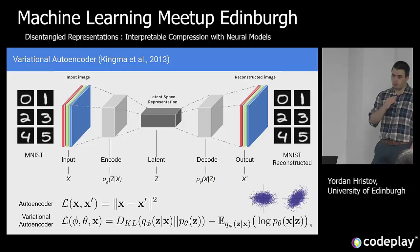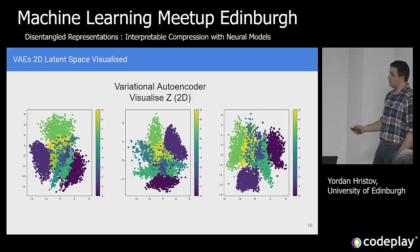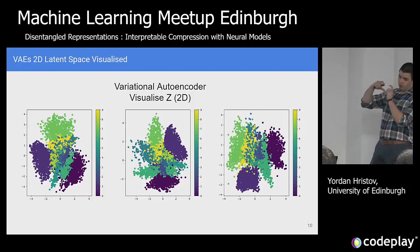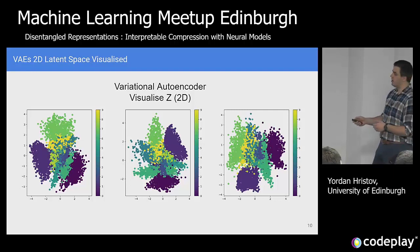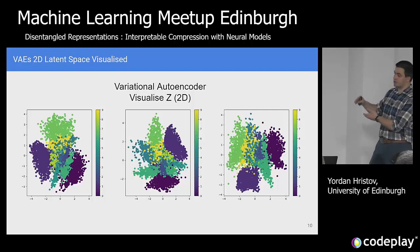If I have a two-dimensional space and I want my codes to look like a two-dimensional Gaussian with diagonal covariance, this approach allows me to impose that on the optimization process. Training the same model three times now shows that most of the data is centered at zero, zero, and doesn't go beyond minus four to four. Regardless of how many times I train it, the data always gets centered there. At test time, I can sample a new data point from a 2D Gaussian, feed it through my decoder, and get an image — possibly one that was never in the dataset. That's the beauty of these models.